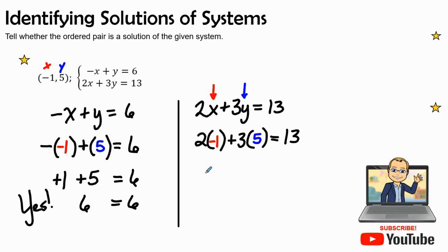So 2 times negative 1 is negative 2 plus 3 times 5 is 15. Does that equal 13? 15 plus a negative 2 is definitely 13. And that answer is yes as well.